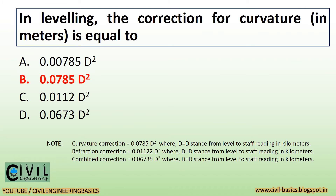In leveling, the correction for curvature in meters is equal to 0.0785 d-squared, where d equals distance from the level to staff reading in kilometers. The combined correction equals 0.0673 d-squared, where d equals distance from the level to staff reading in kilometers.